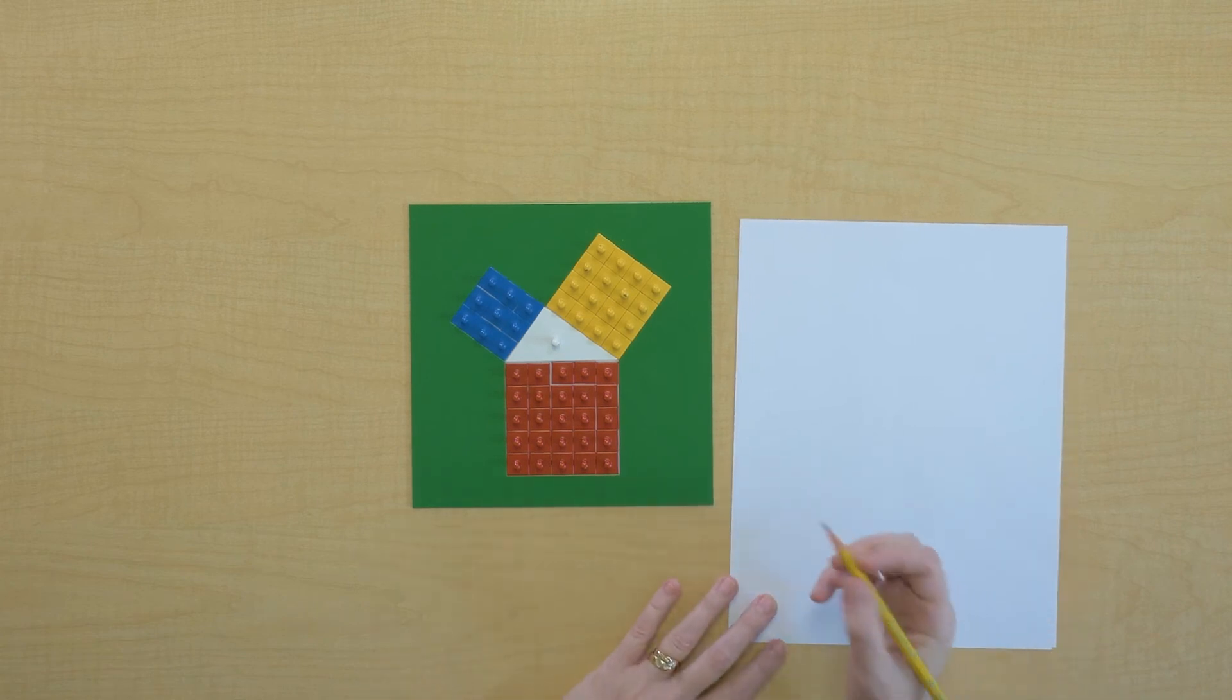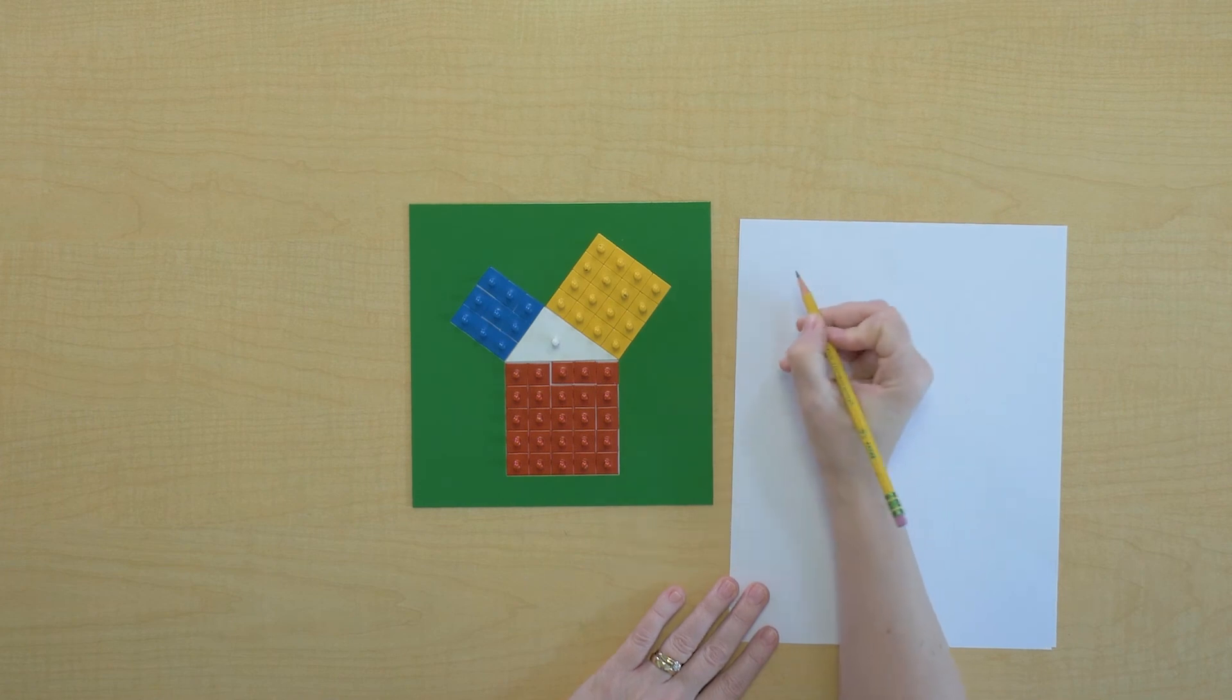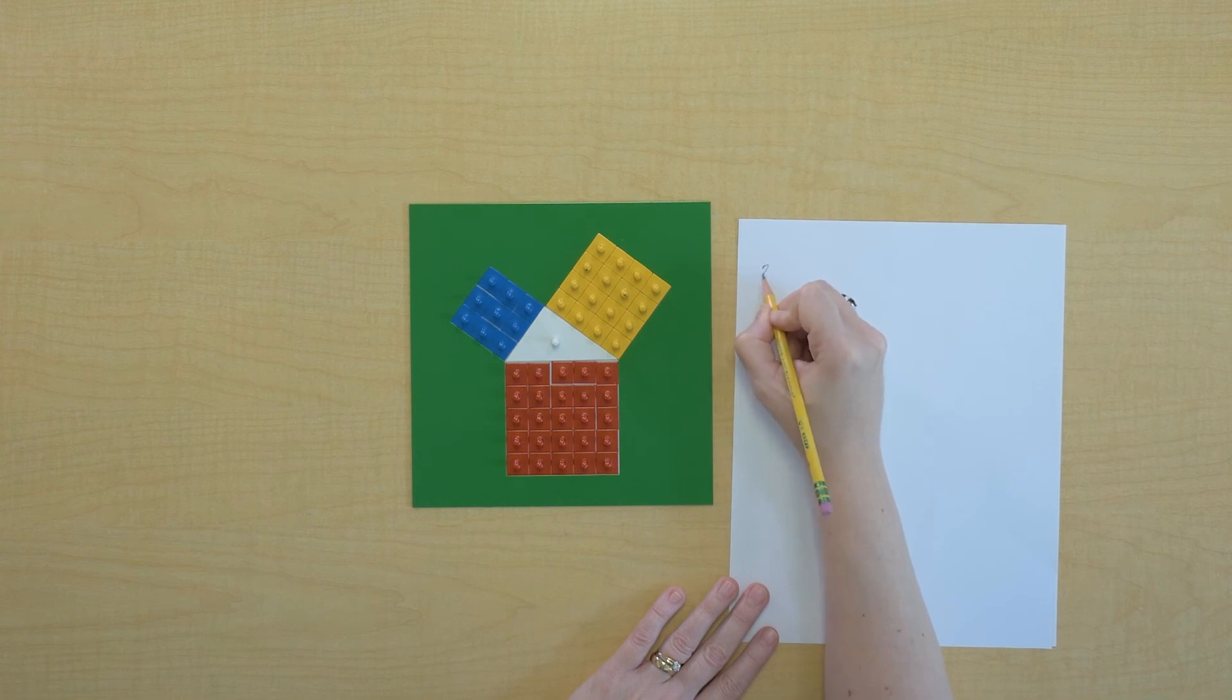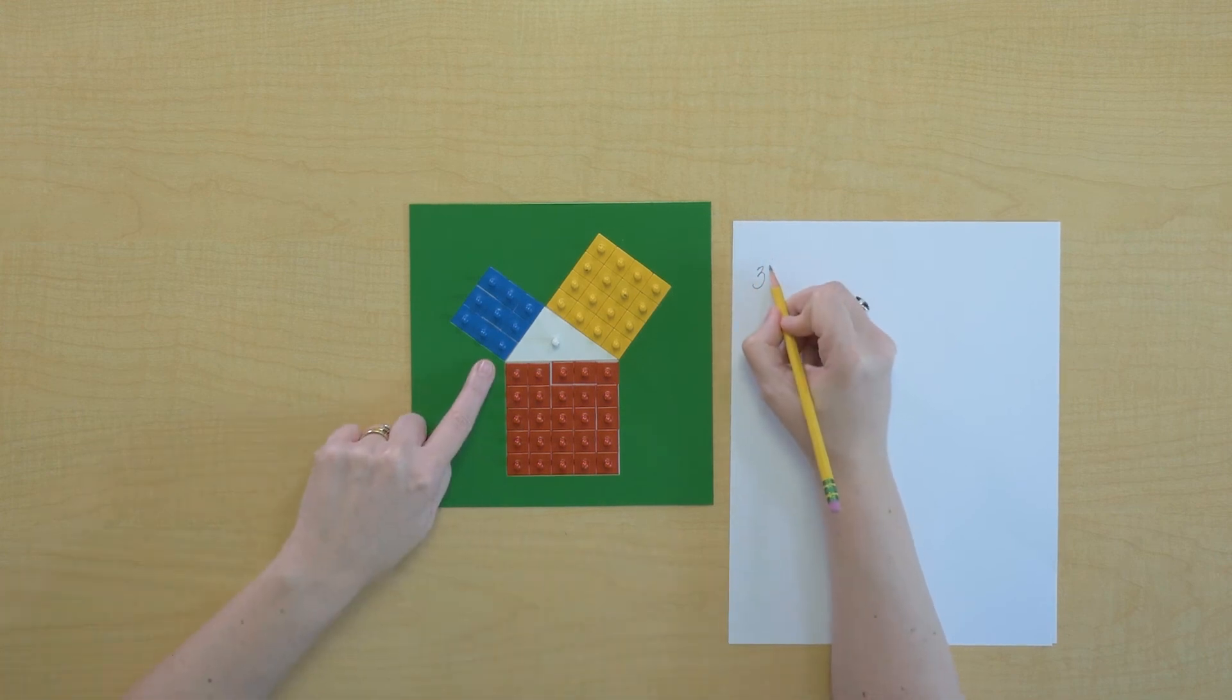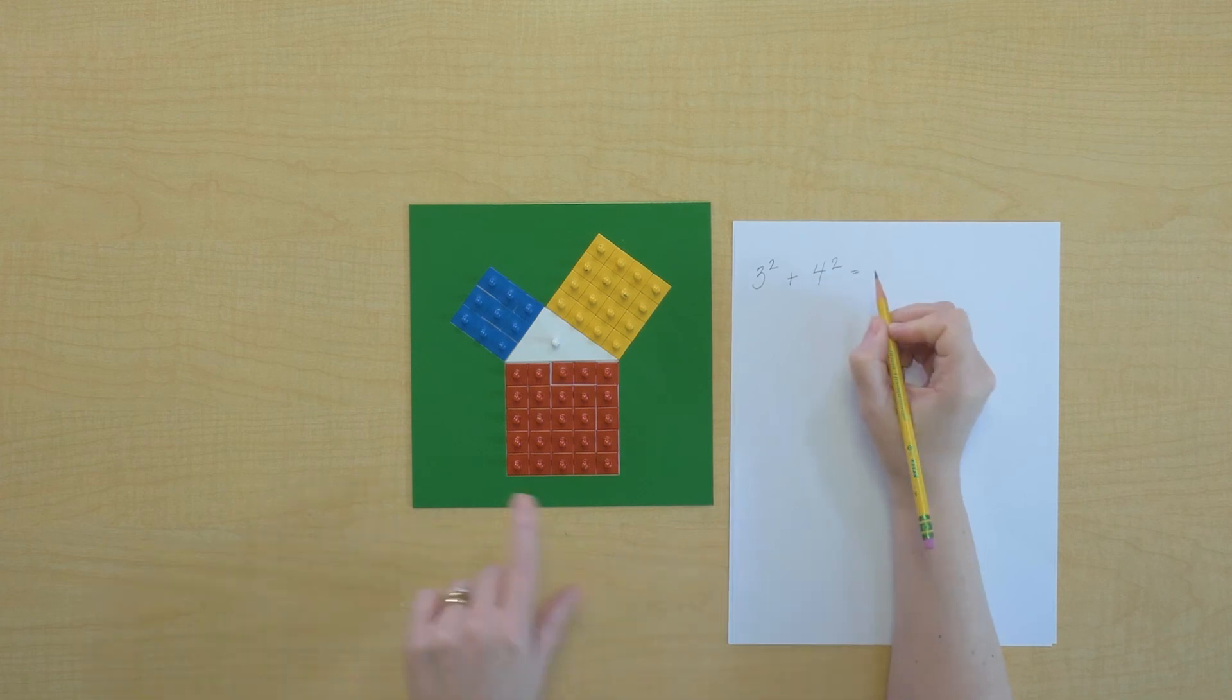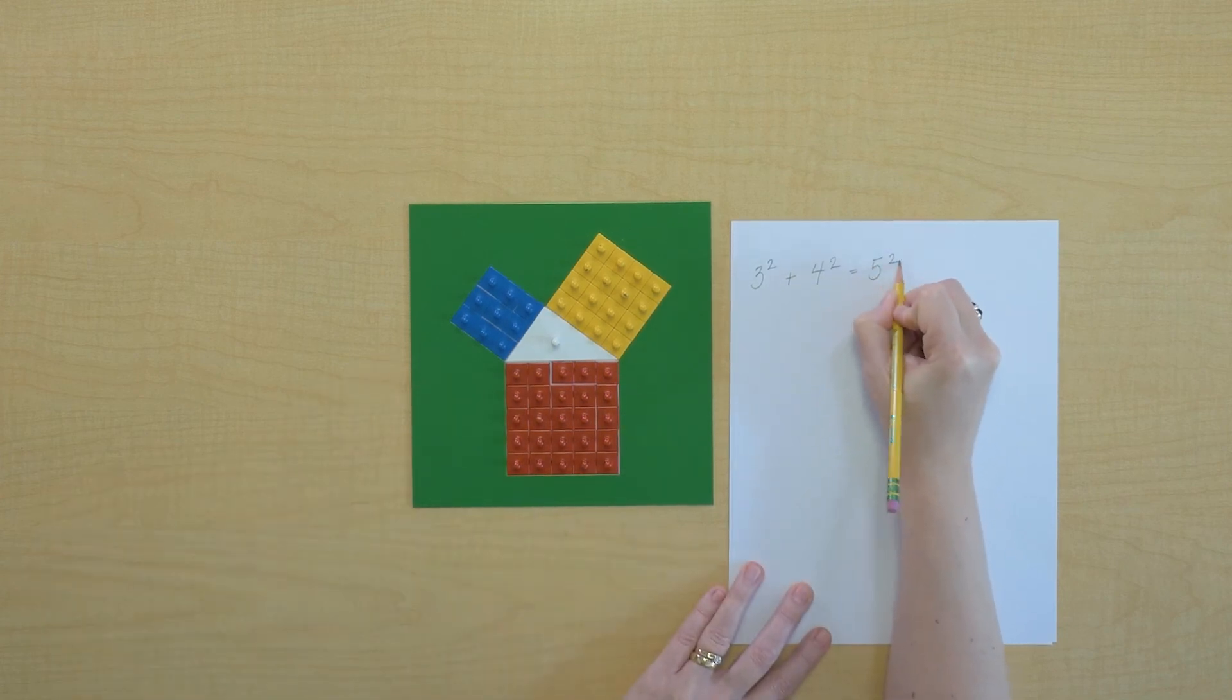Let's write that down. So Pythagoras said that the sum of the squares built on the legs of a right triangle equals the square built on the hypotenuse. So let's do that addition. Let's do that equation. That means we have a three square here plus four square equals the square built on the hypotenuse, which is a five square.